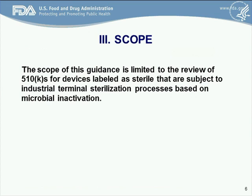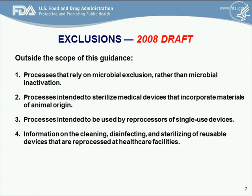The scope of this guidance is limited to the review of 510K for devices labeled as sterile that are subject to industrial terminal sterilization processes based on microbial inactivation. Outside the scope of the guidance document are processes that rely on microbial exclusion rather than microbial inactivation — examples include filtration and aseptic processing. Other exclusions include processes intended to sterilize medical devices that incorporate materials of animal origin, processes intended to be used by reprocessors of single-use devices — there's a separate guidance document for that — and information on cleaning, disinfection, and sterilization of reusable devices reprocessed in healthcare facilities, which also has a separate dedicated guidance document.